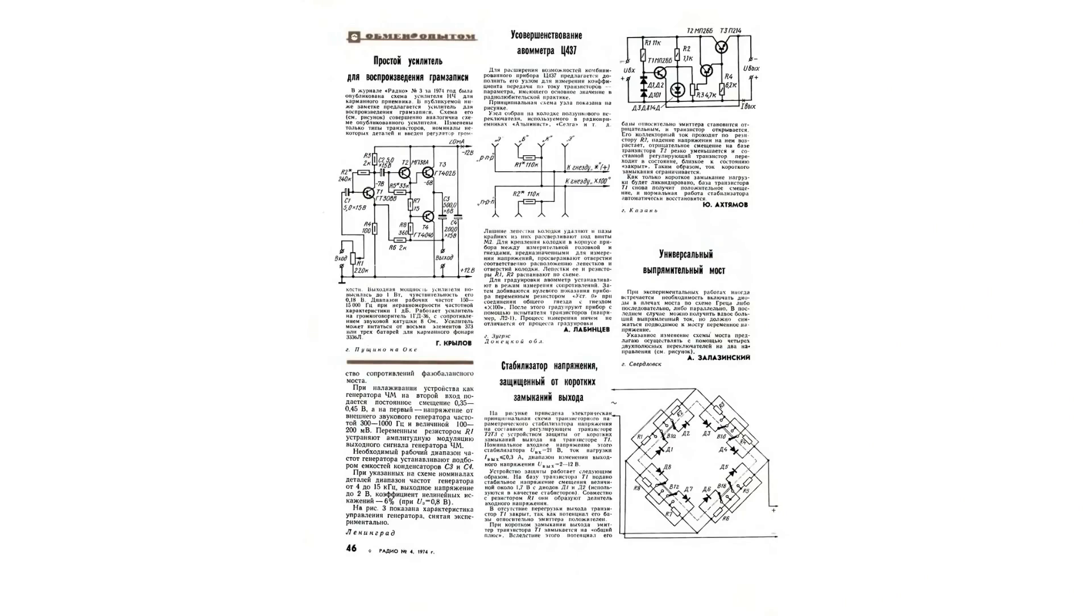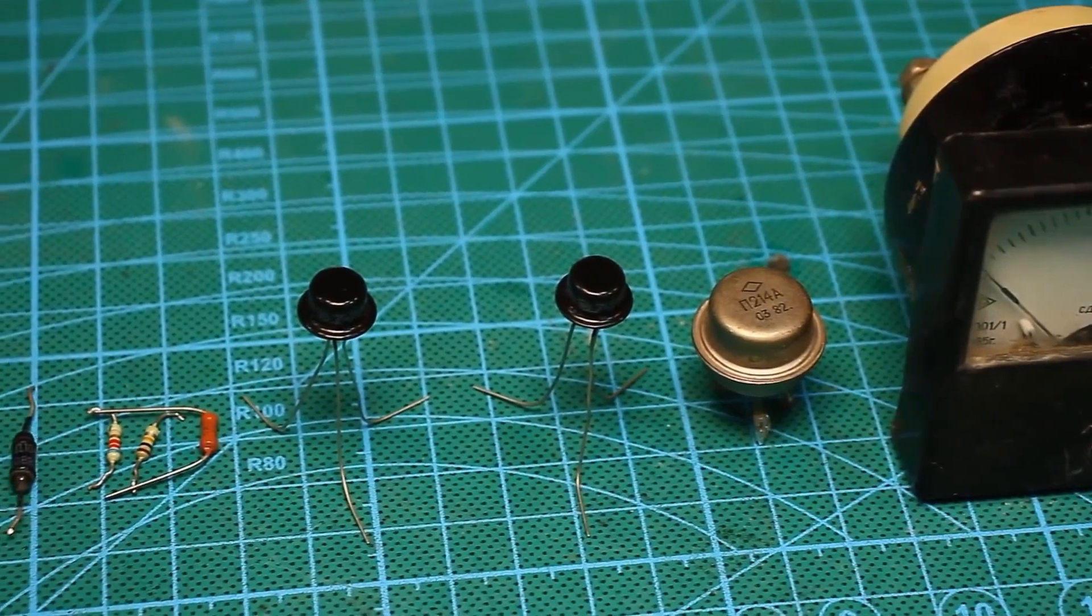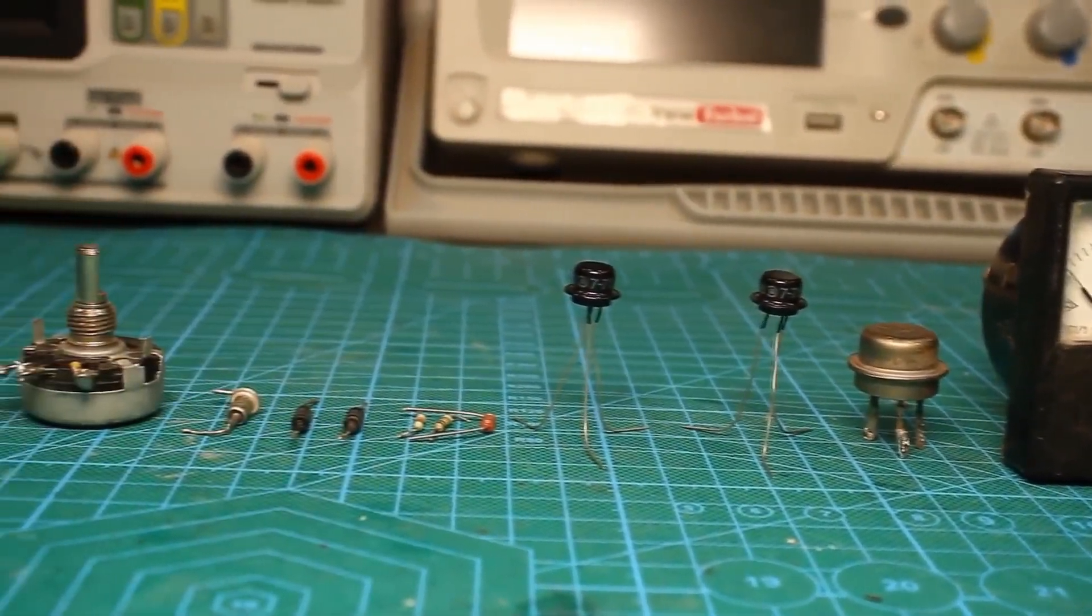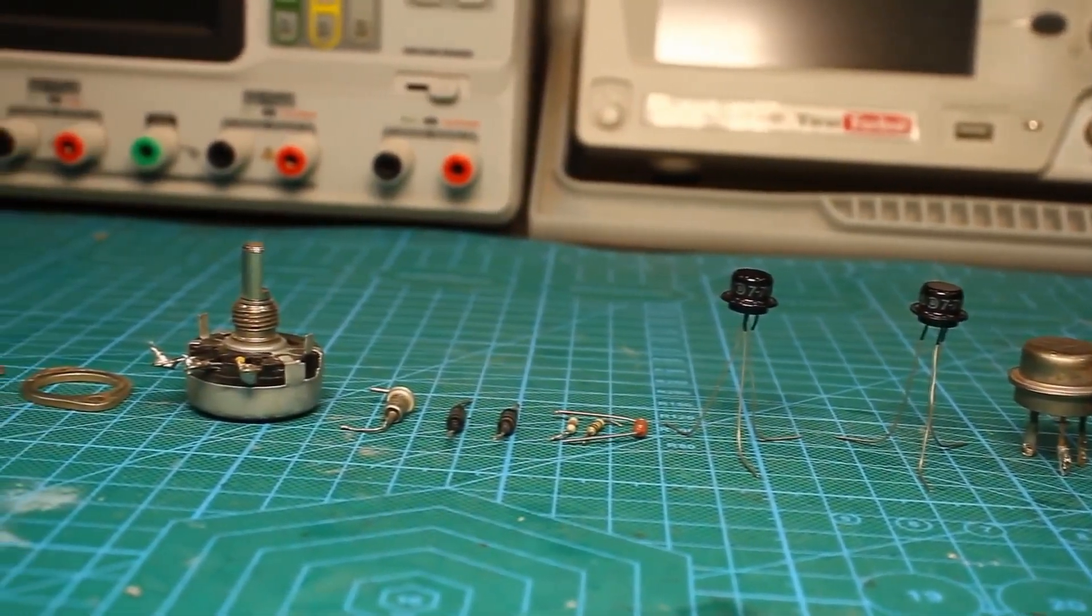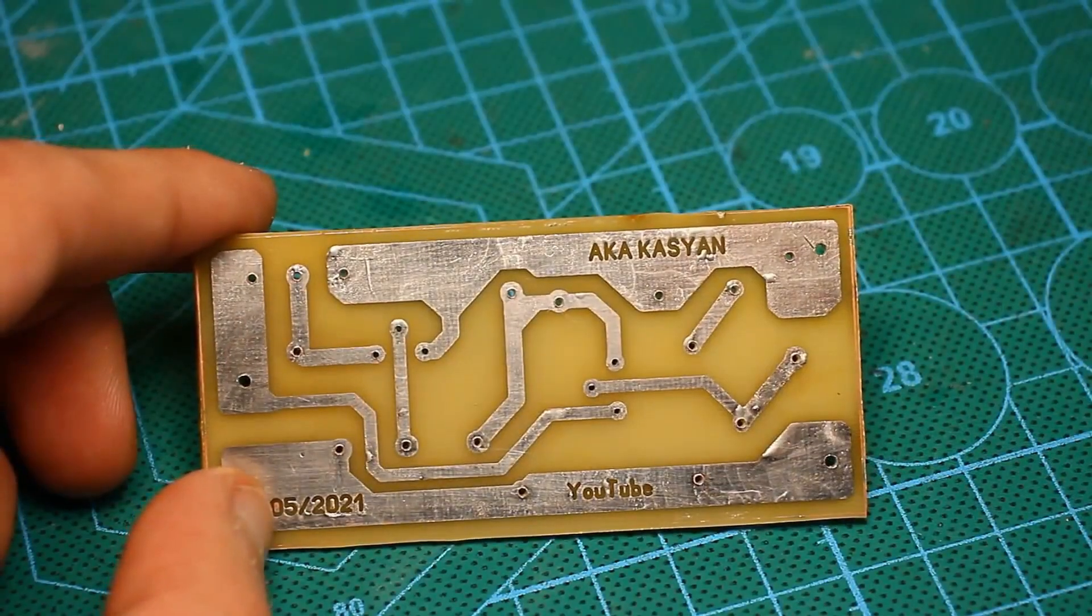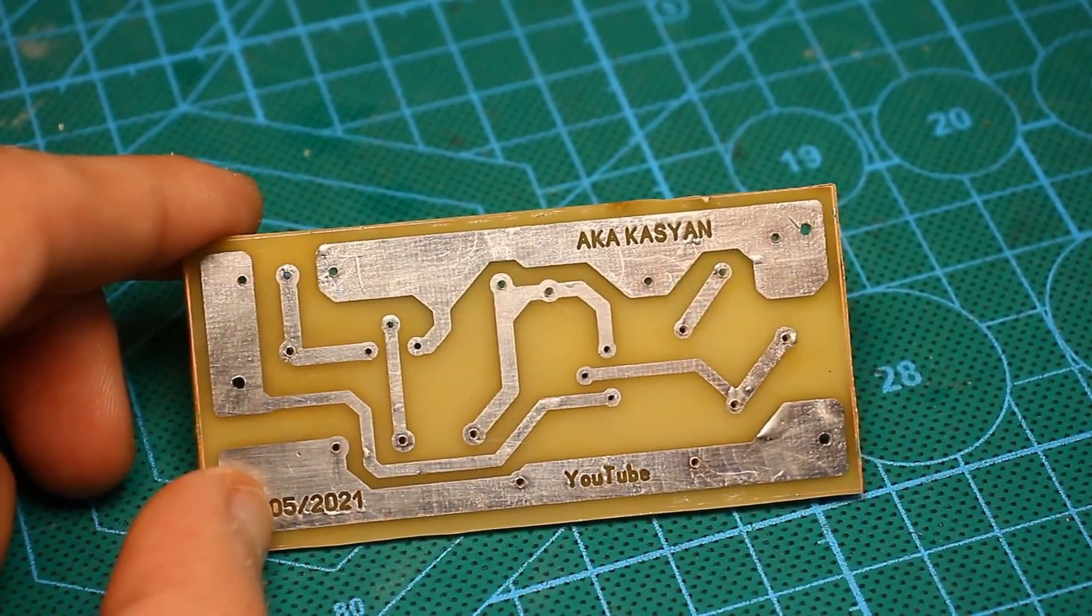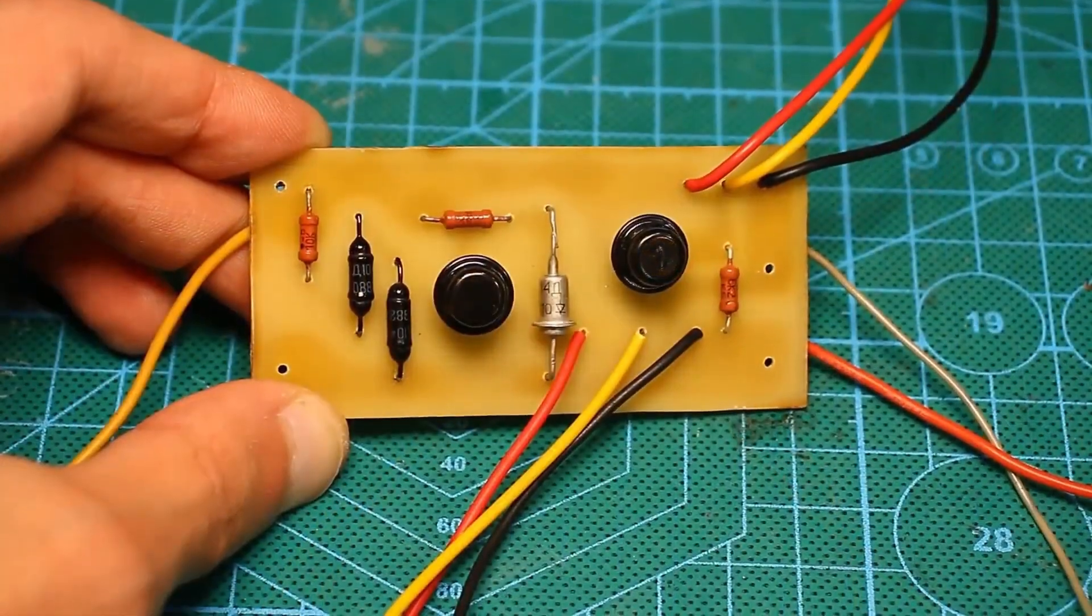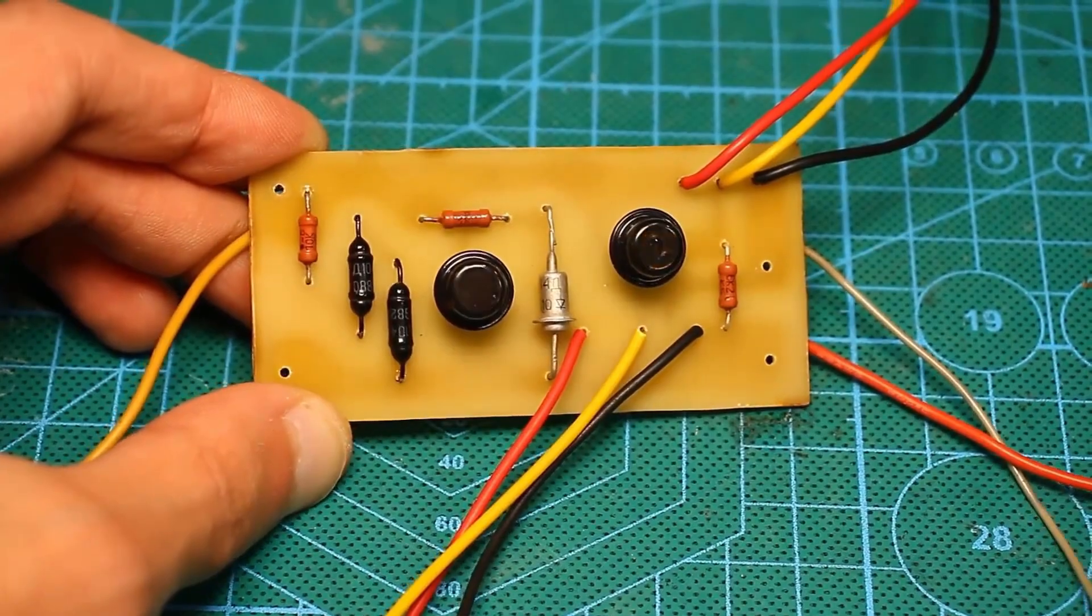The design was presented in the fourth issue of the magazine Radio from 1974. The circuit is older than most of my audience. Everything we need is on the table, except for the transformer, rectifier, and smoothing capacitor. Right, I also forgot about the board. I made it just in case. Maybe someone will decide to assemble it. You can download it along with the project's general archive via the link in the description.